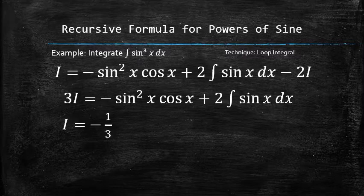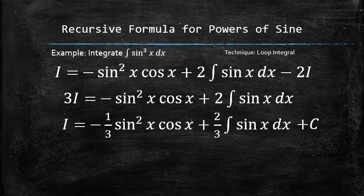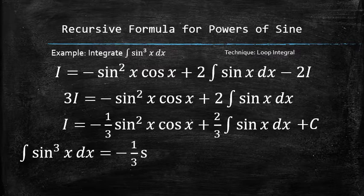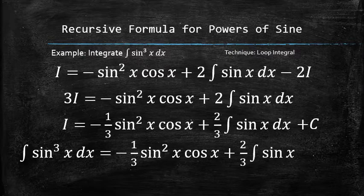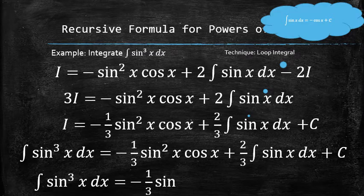To isolate i, we divide both sides by 3 and add plus c to the result. After replacing i with the original integral, we now have the formula that relates the integral of the cube of sine to the integral of just sine, which we already know. Therefore, we now have the formula for the integral of the cube of sine.